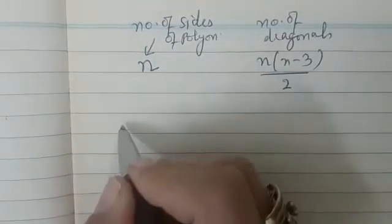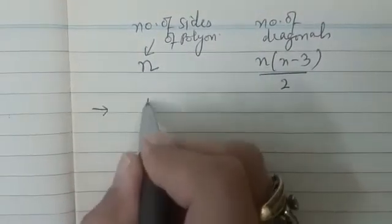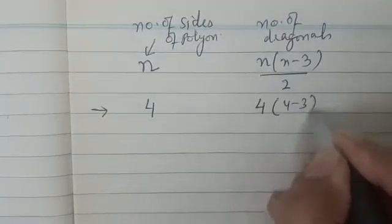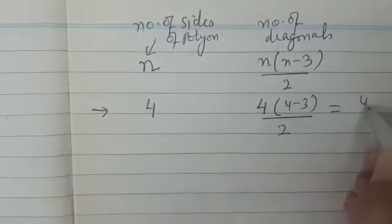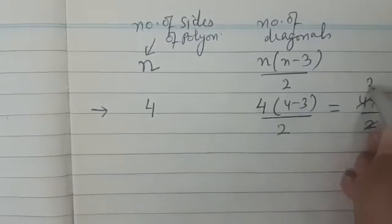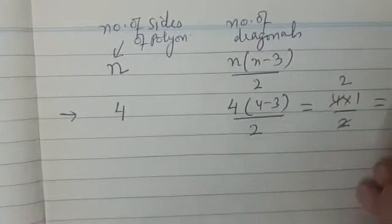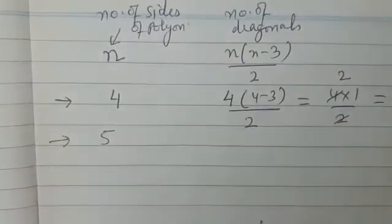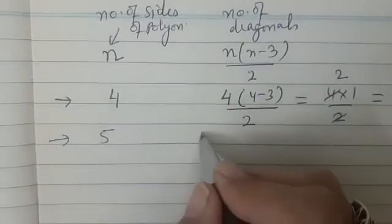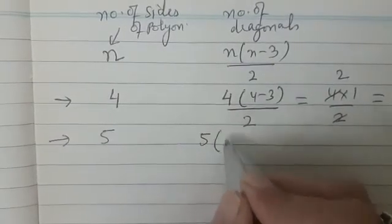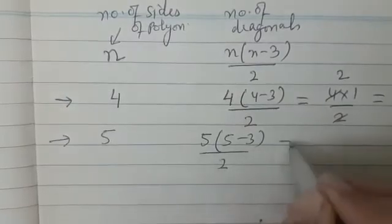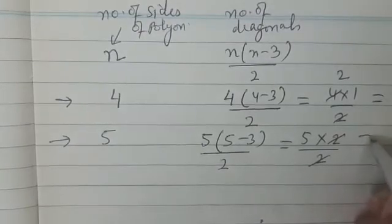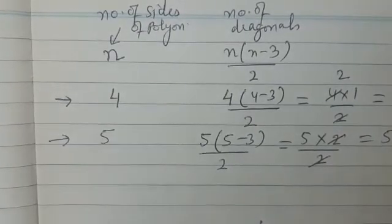For example, if N = 4: 4 × (4 − 3) / 2 = 4 × 1 / 2 = 2 diagonals. If it is a pentagon, N = 5: 5 × (5 − 3) / 2 = 5 × 2 / 2 = 5 diagonals. This matches what we verified by drawing.